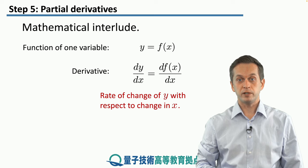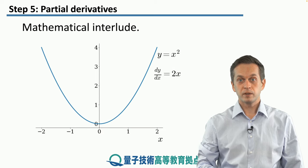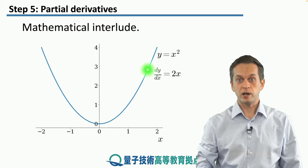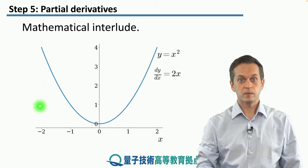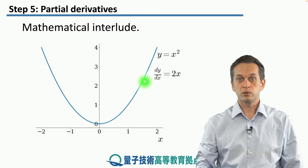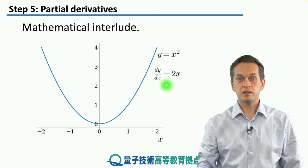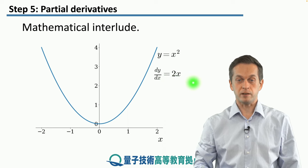We can consider an example. Let's pick y is equal to x squared — that's given by this blue line. The rule to take the ordinary derivative of this function is simply to pull the exponent of two down, and we get dy/dx is equal to two times x.